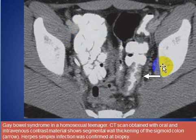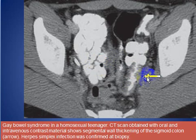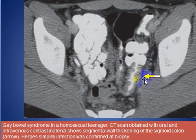Here is a patient with gay bowel syndrome in a homosexual male. We see some thickening of the wall of the sigmoid colon after oral and IV contrast, due to infection with herpes simplex, associated with some lymphadenopathy.